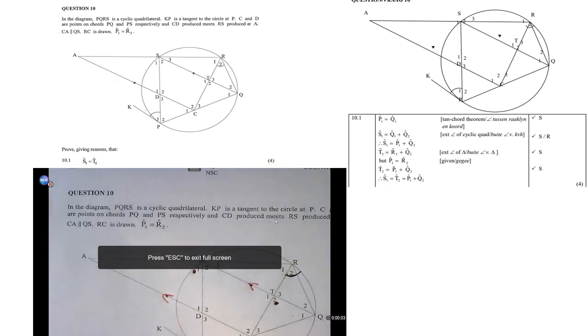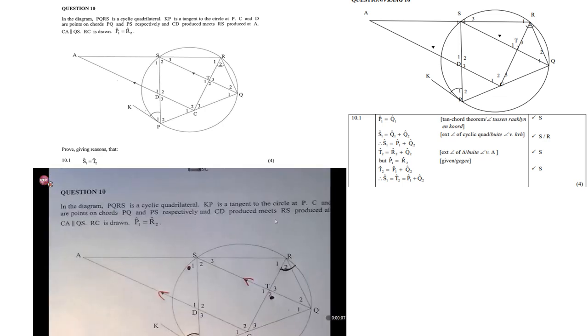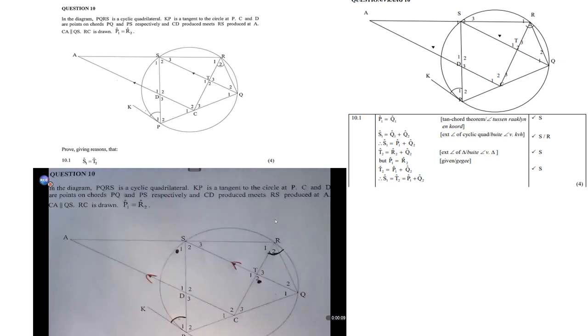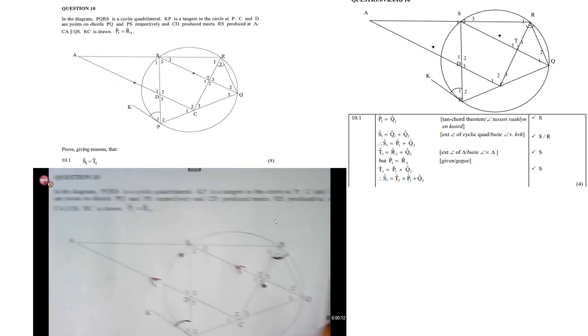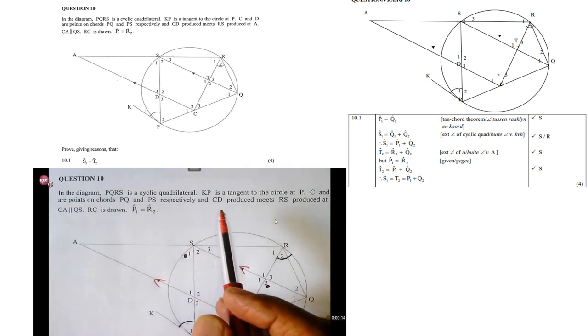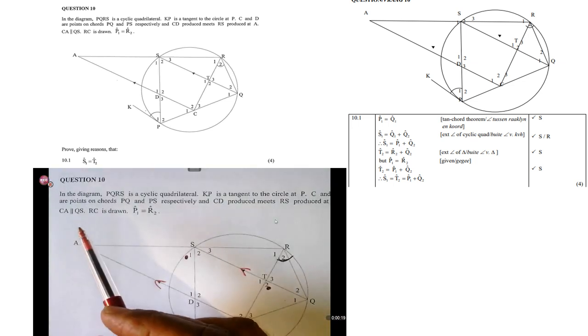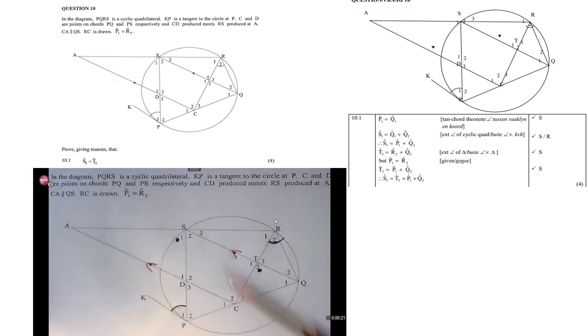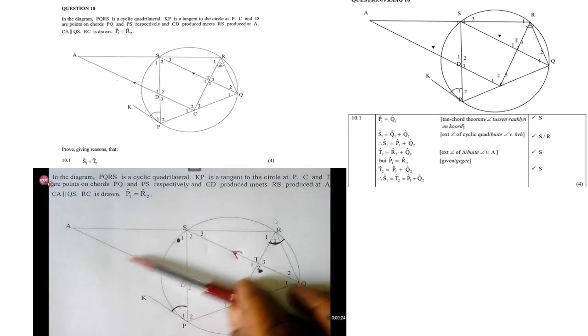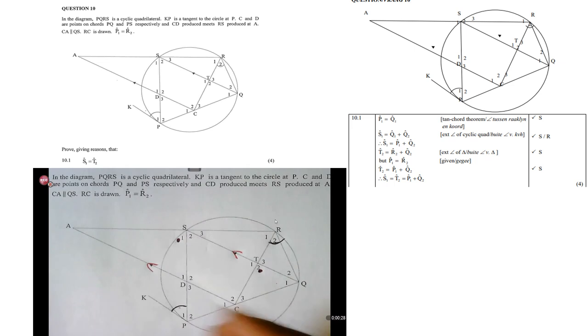All right, this is Question 10. In this diagram, PQRS is a cyclic quadrilateral. KP is a tangent to the circle at P. C and D are points on the chords PQ and PS respectively, and CD produced meets RS at A. CA is parallel to QS. There is QS and there is CA, so they are parallel. And angle P1 is equal to angle R2.